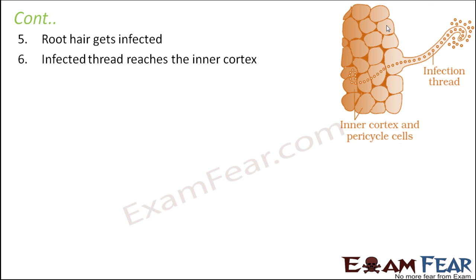The infected thread then reaches the inner cortex. Once the root hair gets infected, this chain of bacteria goes deeper inside the root layers and reaches the inner cortex. You can see the inner cortex here, along with the pericycle layer — as we studied in the cross-section of a root: outer cortex, inner cortex, then pericycle, then xylem and phloem. This is how the infected thread is formed.